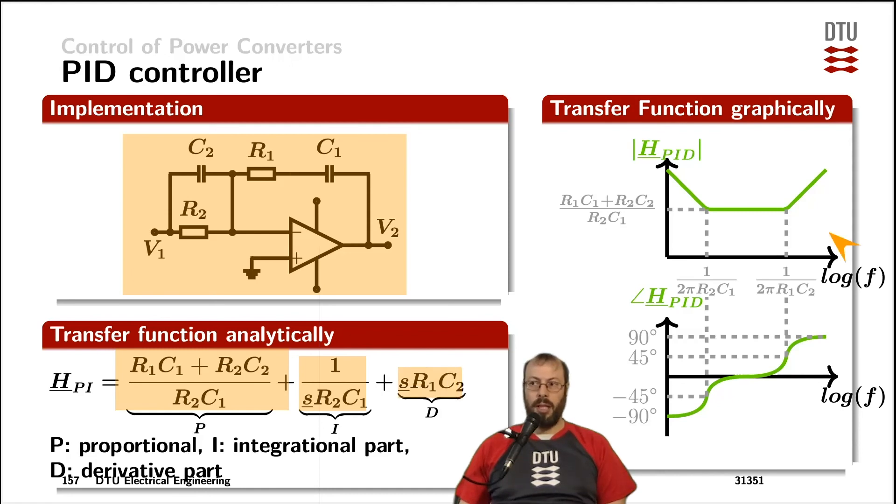The extra zero compared to the PI controller shows up here, adds further gain towards high frequencies, but also turns the phase positive to compensate for a potential instability from the PI version.